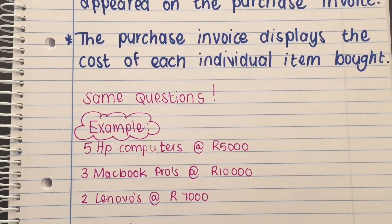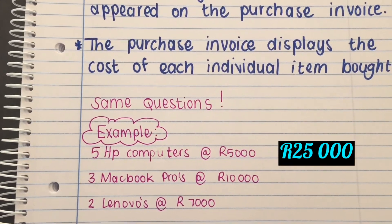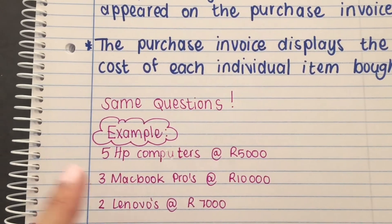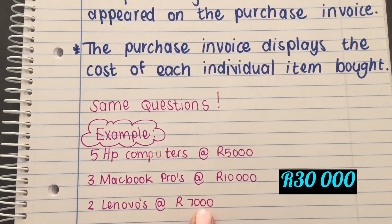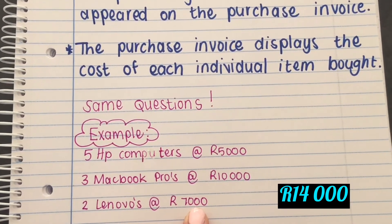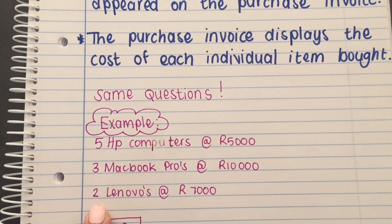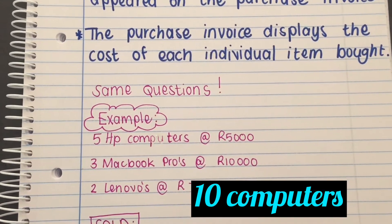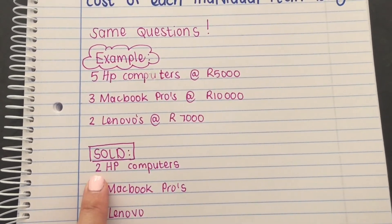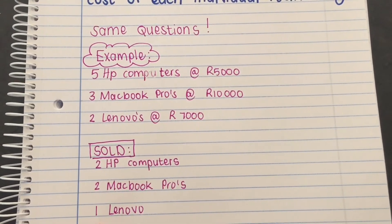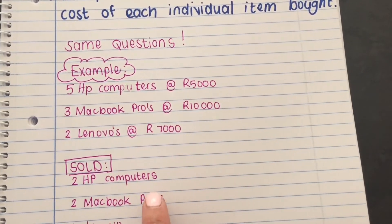I've got five HP computers at 5,000 Rand each, giving a total value of 25,000 Rand; three MacBook Pros at 10,000 Rand, so that's 30,000; and two Lenovos at 7,000 Rand, so that's 14,000 Rand. My total number of computers is ten. If I were to sell two HP computers, two Macs, and one Lenovo, the cost price will be linked to each of them.